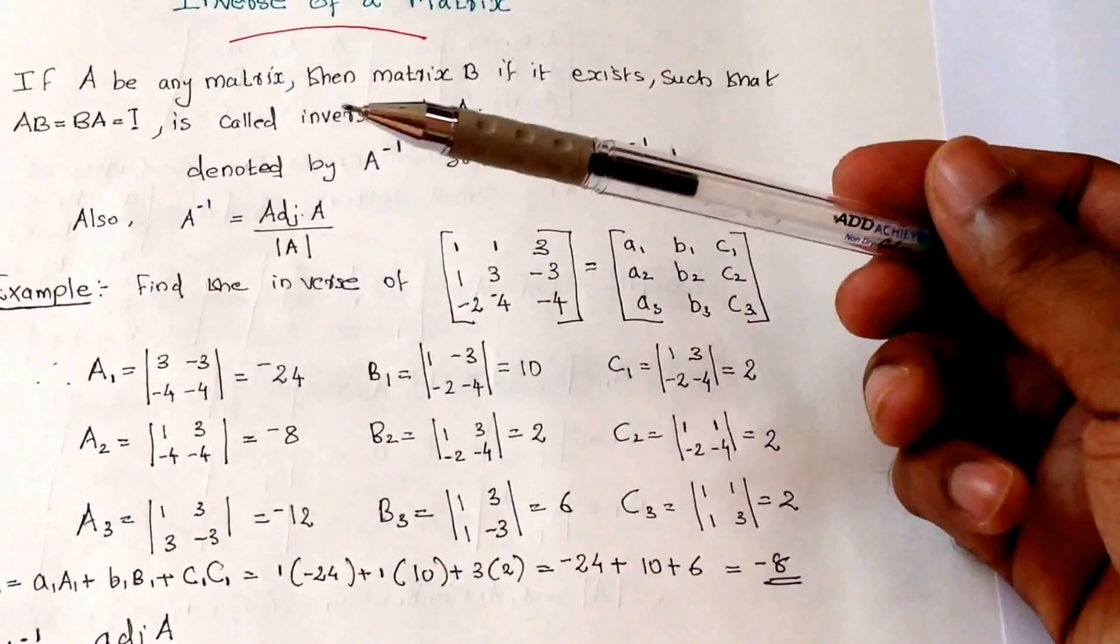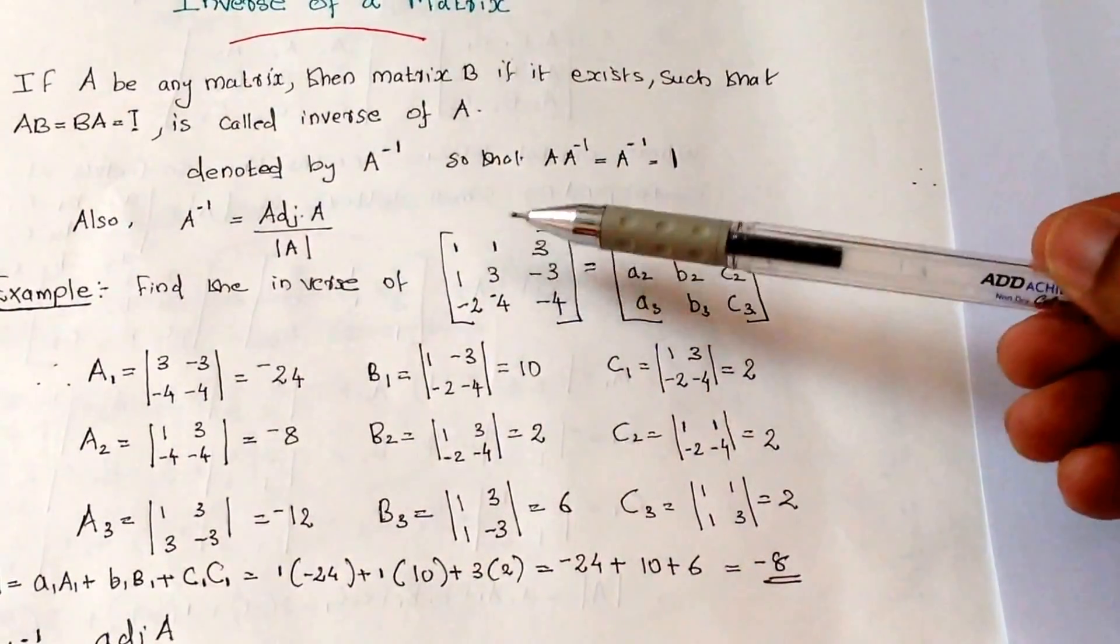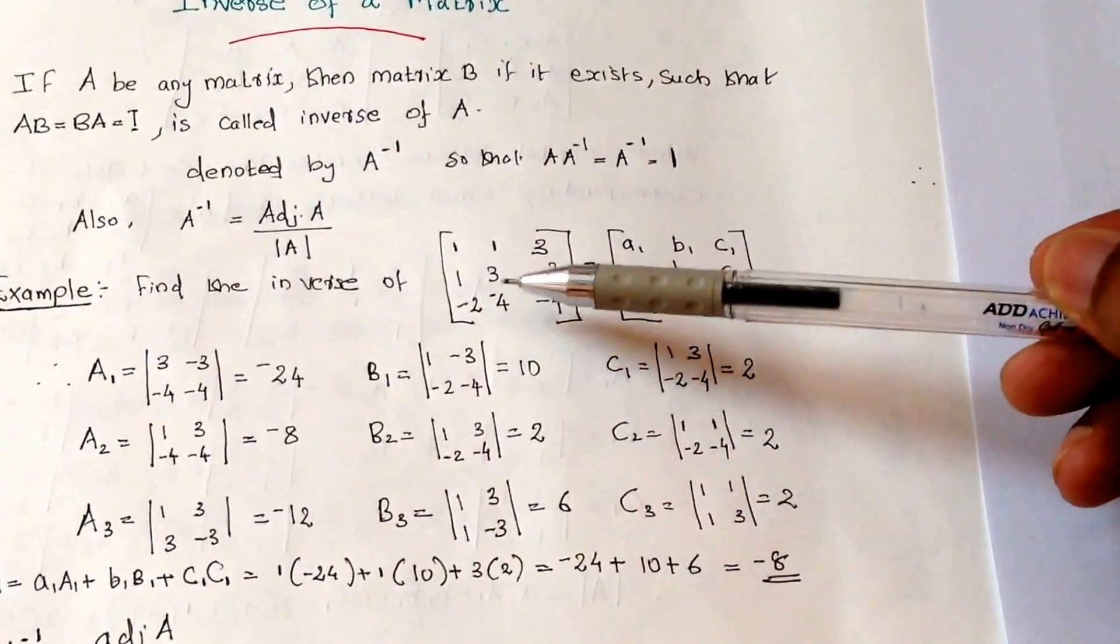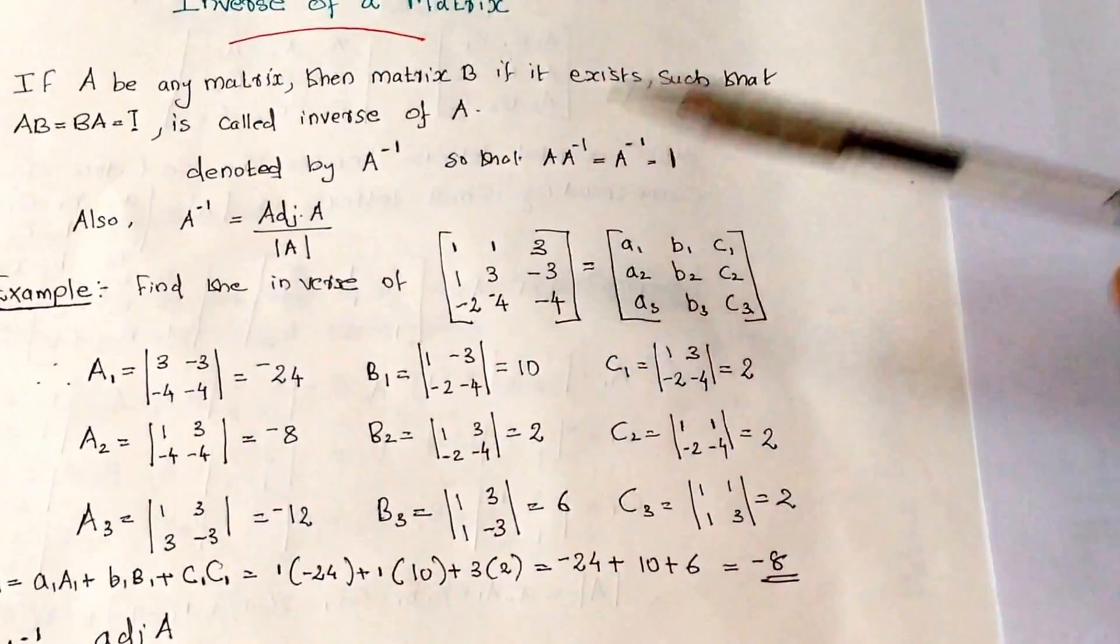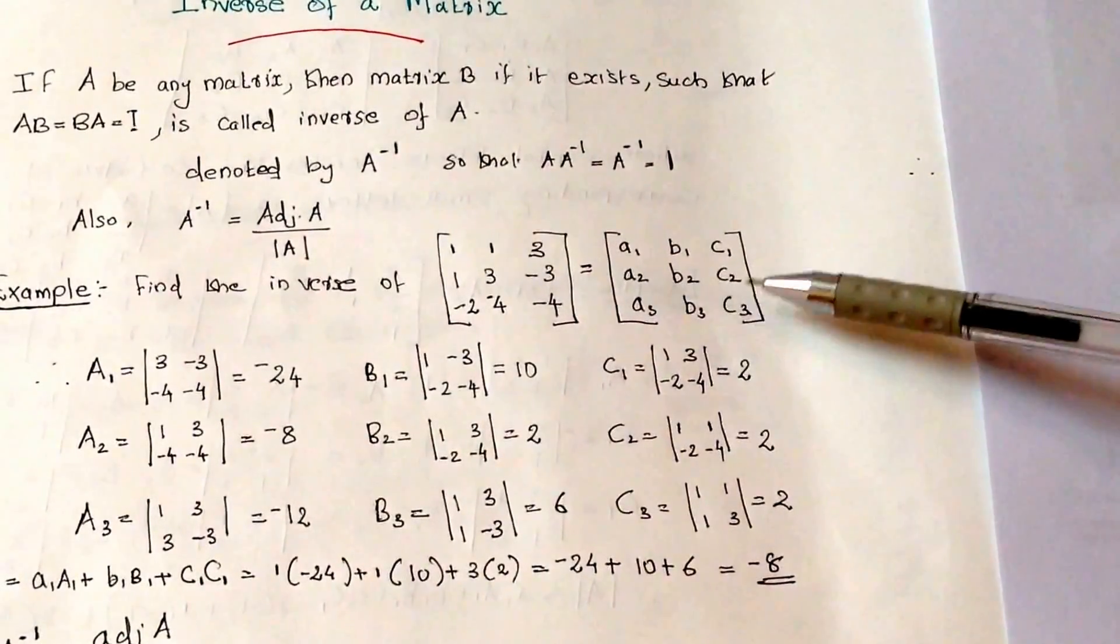Let's take an example: find the inverse of matrix 1, 1, 3, 1, 3, minus 3, minus 2, minus 4, and minus 4. Correspondingly we have A1, B1, C1, A2, B2, C2, A3, B3, C3.